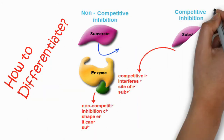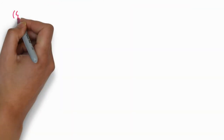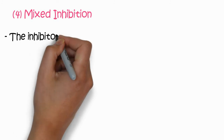To differentiate between non-competitive and competitive inhibition: in non-competitive inhibition, the inhibitor changes the shape of the enzyme so the substrate cannot bind, while in competitive inhibition, the competitive inhibitor interferes with the active site of the enzyme directly so the substrate cannot bind. Those are the main differences between the two types.